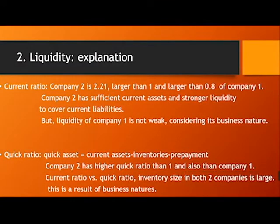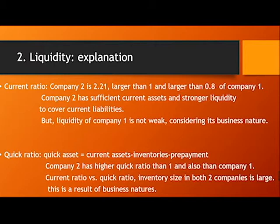Hello, I'm C-Long, also known as Michael. I will continue the introduction. Quick ratio excludes inventories and prepayments from current assets. Company two has a higher quick ratio than company one. Inventory size in both companies is large as a result of business nature — both are food companies and supermarkets that need to keep large amounts of inventory for sales.